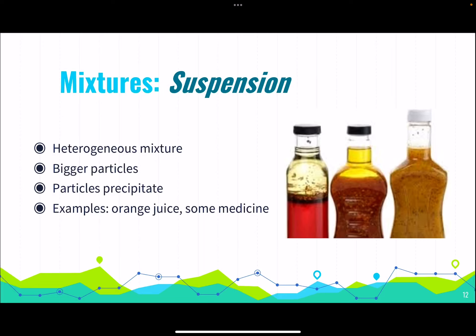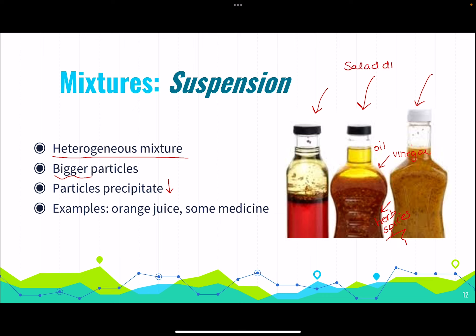The last type is a suspension, which is also heterogeneous, so we can identify the different components. The particles are bigger and they do precipitate. The best example is salad dressing — if we leave it in the fridge, we can see the different compositions separate: some oil on top, some vinegar, and solid particles like herbs or spices that settle to the bottom. That's why we have to mix salad dressing before using it. Other examples include orange juice and certain medicines that we also have to shake before taking our dose.